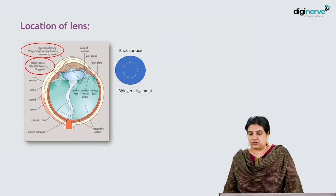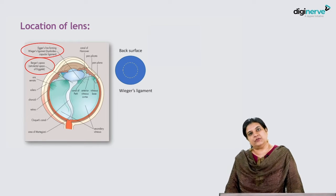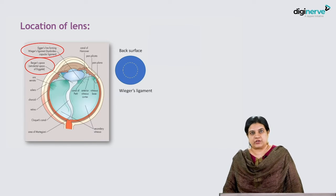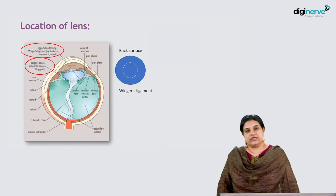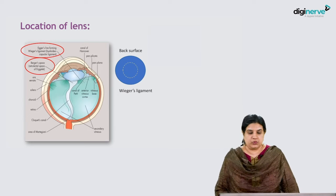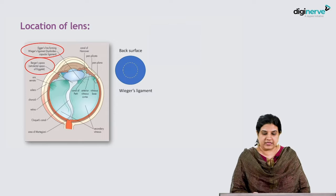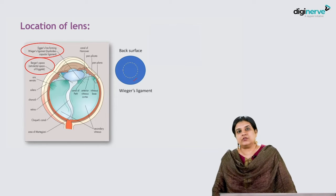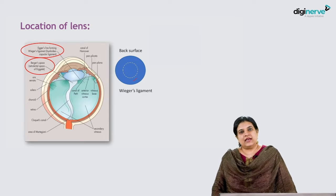Let's look at the location of the lens. The lens lies between the posterior surface of iris and the vitreous in a saucer-shaped depression called the patellar fossa. The posterior surface is in contact with vitreous and is attached by Wieger's ligament.